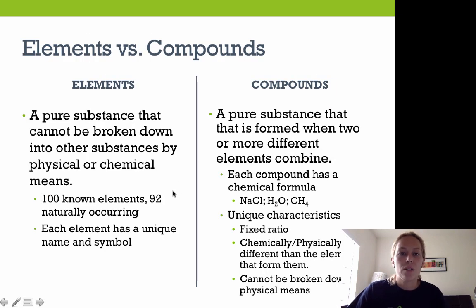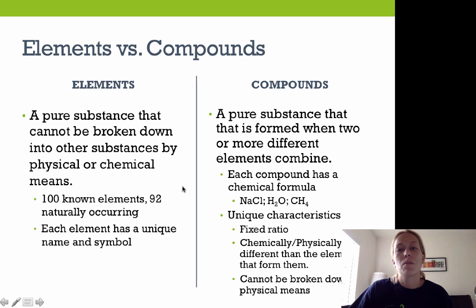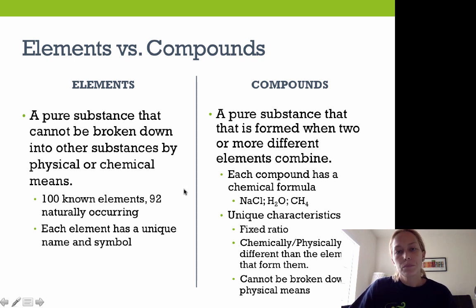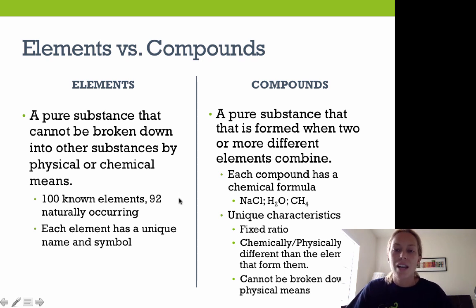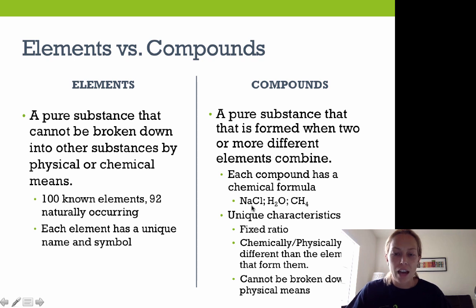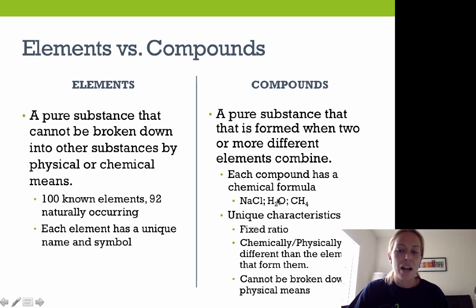Element versus compound: an element is a pure substance that cannot be broken down further by either physical or chemical means. There are 118 known elements — 92 of them are naturally occurring and the others are man-made. Each element has a unique name or symbol; the periodic table of elements are truly elements that can't be broken down. A compound is a pure substance formed from two or more different elements — for example, sodium chloride, water (H₂O), and CH₄ (methane) are all compounds formed by combining two or more elements.